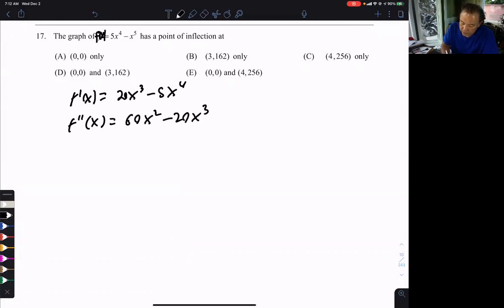And we're going to factor out 20x squared because they both have a 20x squared. That's going to give me 3 minus x.